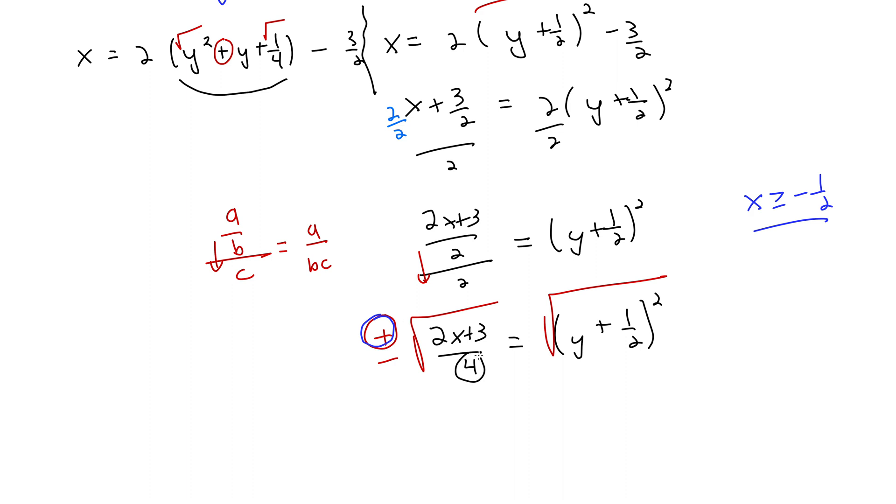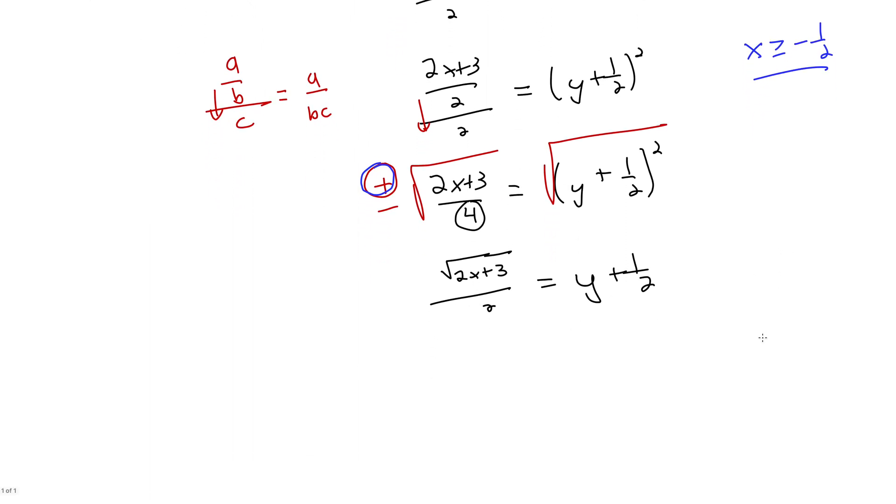We'll note that square root of 4 is 2. So this is simply square root of 2x plus 3 on the top all over 2 on the bottom equals y plus one half. And finally, subtract one half from both sides to get y equals square root of 2x plus 3 all over 2 minus one half.